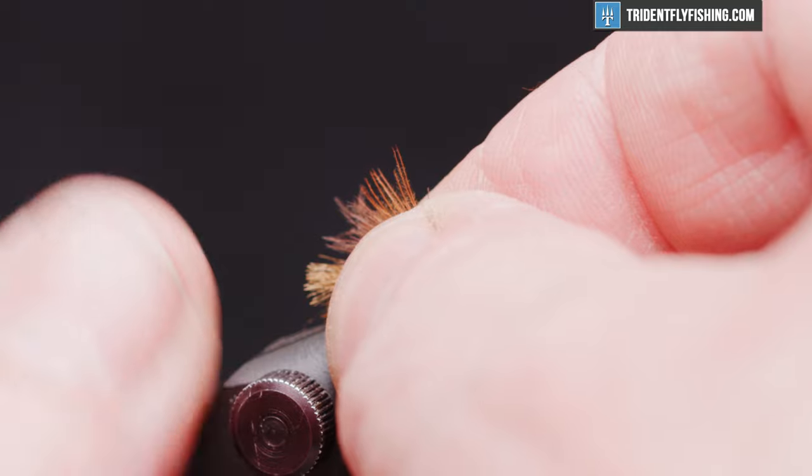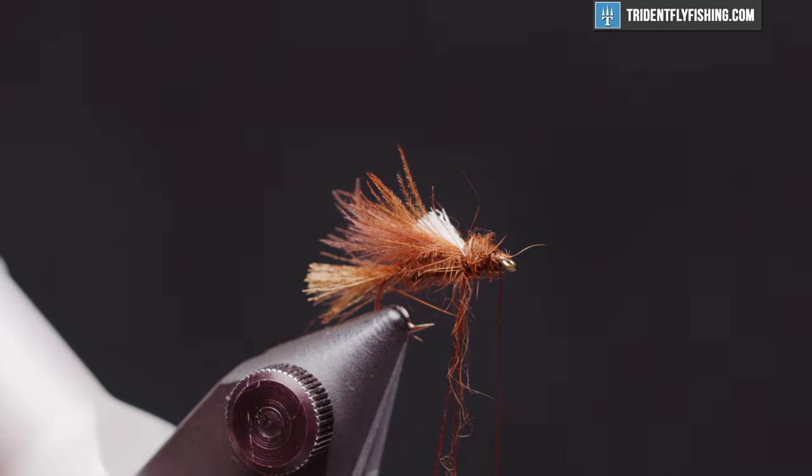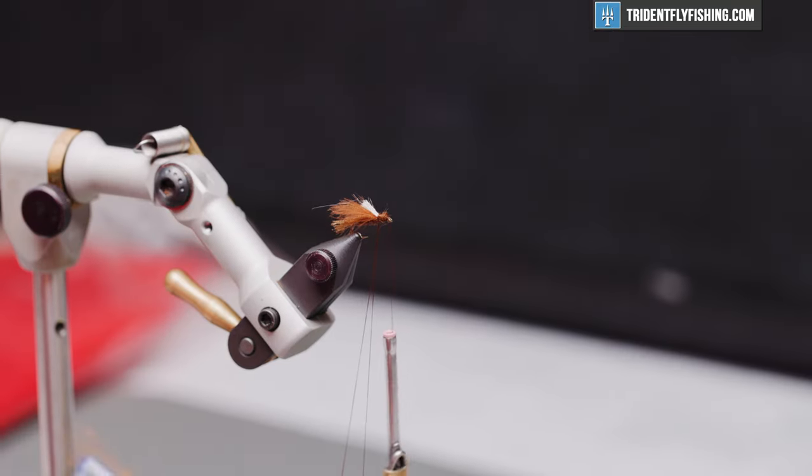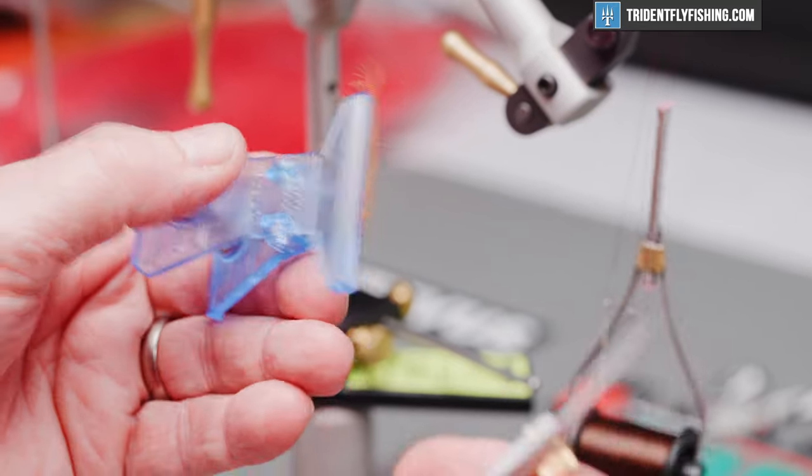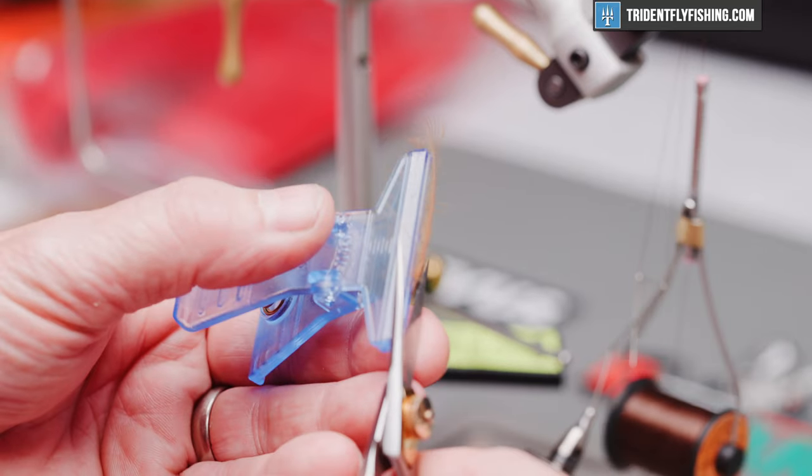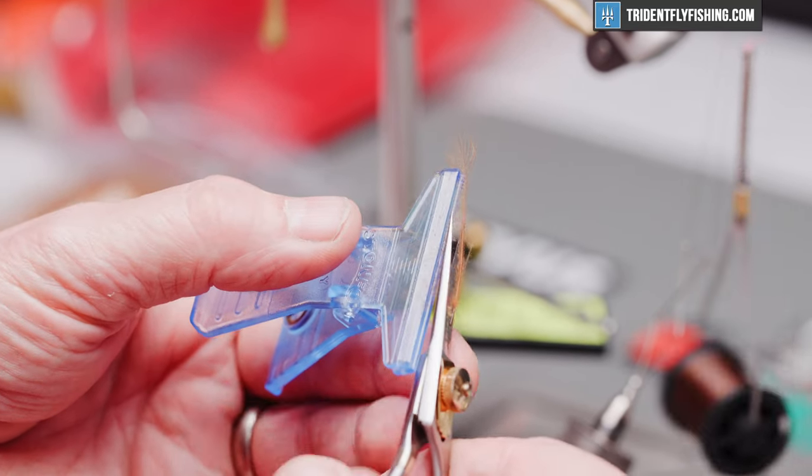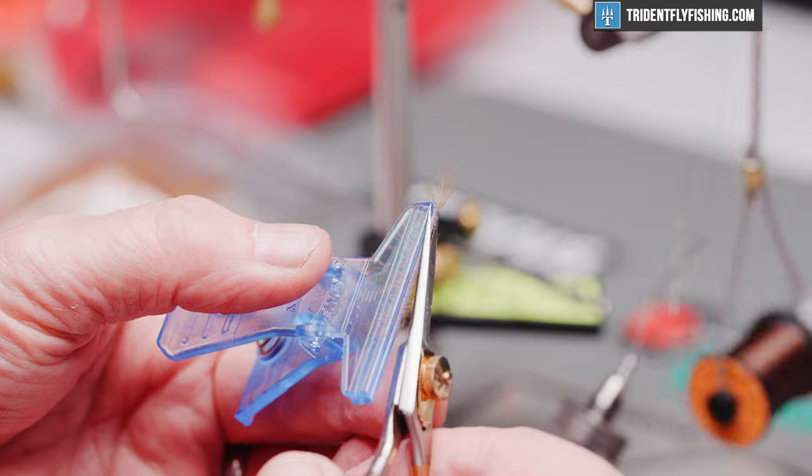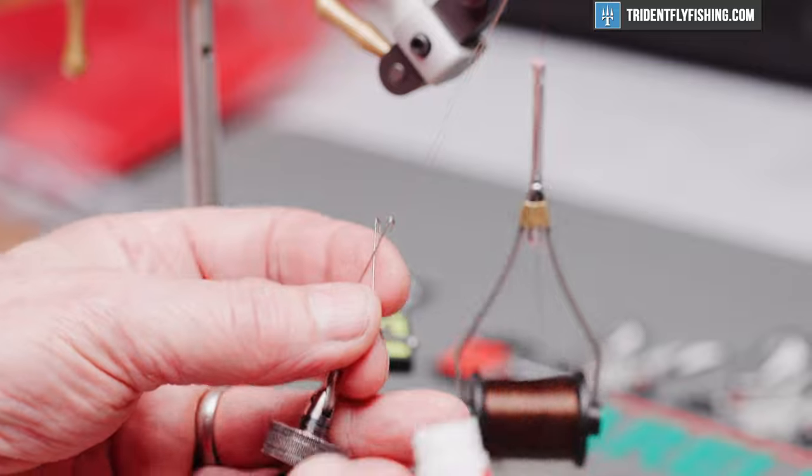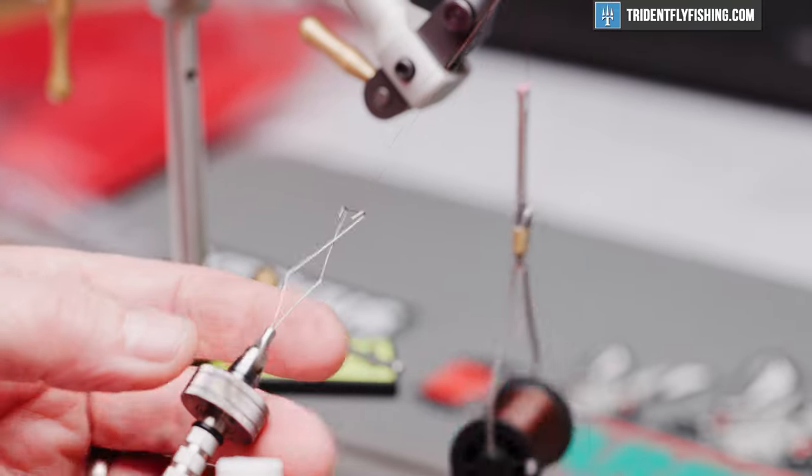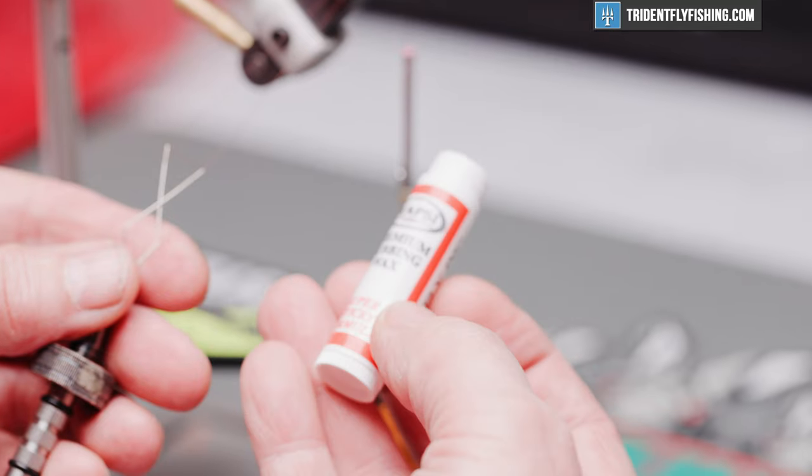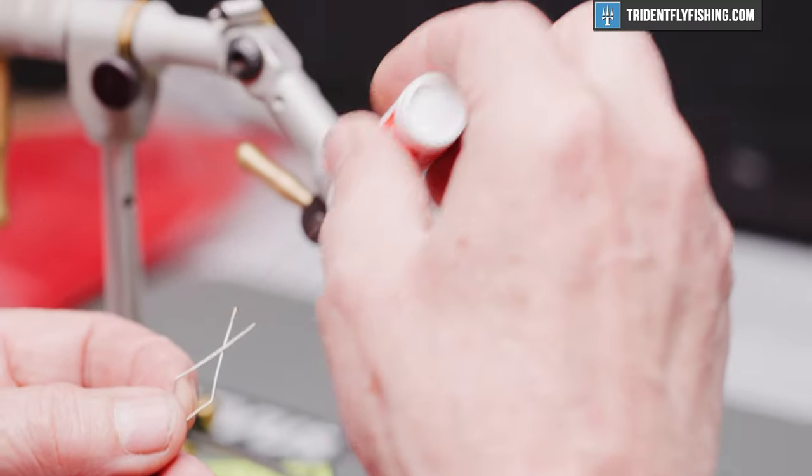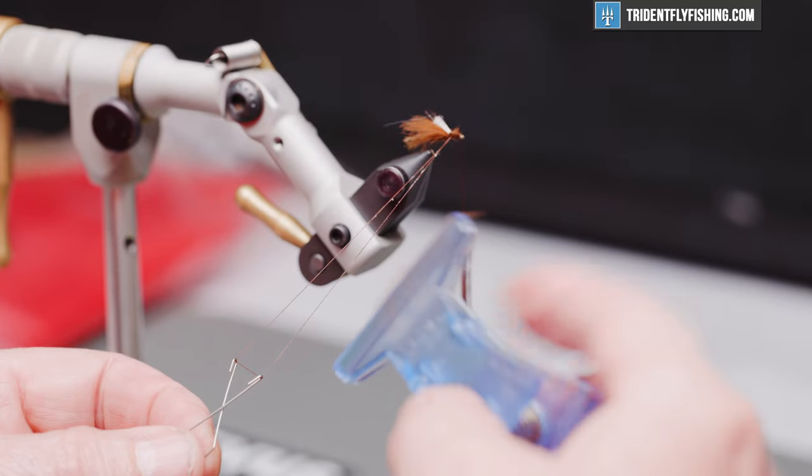We're going to tip our fly back here so our work doesn't fall off the front. I've got a CDC feather here that I have in a Staunfo material clip, and we're going to cut that away from the stem. To help hold it in the loop for us, I'm going to use a little bit of Wopsy's Super Sticky Formula. It's good dubbing wax.